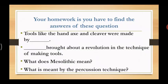In this lesson we learned about the different periods of the stone age — old, middle, and new — and the different tools used by man according to different tasks. We also learned how man adapted to changes in the environment and changed his lifestyle. For homework: tools like the hand axe and cleaver were made by dash; dash brought about a revolution in tool-making techniques; what does Mesolithic mean; and what is the percussion technique? That's all for now. Thank you, children. Goodbye and take care.